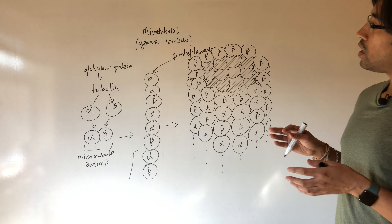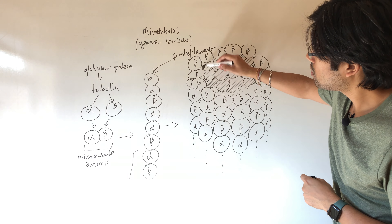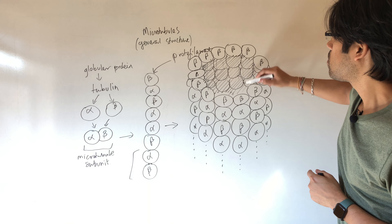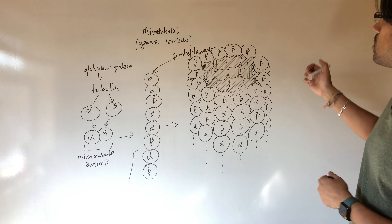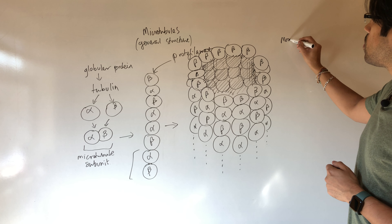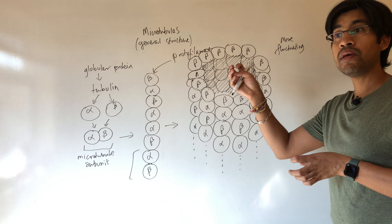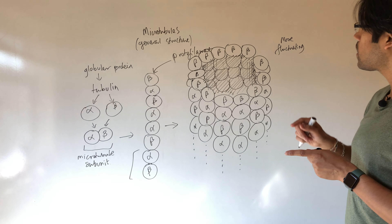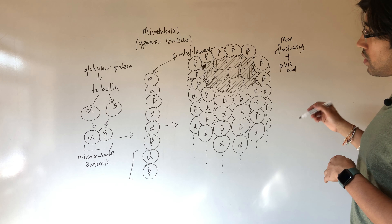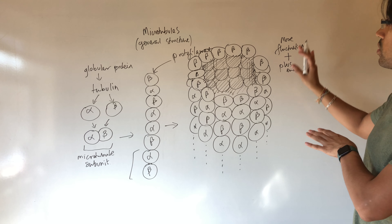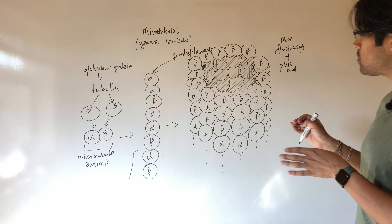Microtubules are formed of globular proteins, and the protein that makes the microtubules is called tubulin. It's a globular protein, not fibrous. Similar to actin filaments, which are made up of a globular protein, tubulin is also globular — unlike the intermediate filaments, which are made up of fibrous proteins. Tubulin comes in two forms: alpha and beta. Both of these proteins separately exist, but they come together to form a heterodimer — a dimeric protein where each of the two subunits is different.